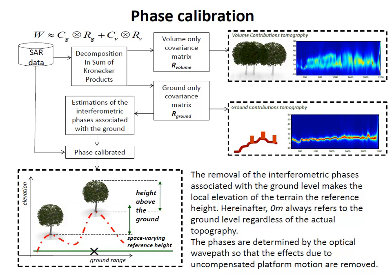To perform phase calibration, we exploit information from the interferometric and polarimetric perspectives. We describe the data using the sum of coherency matrix, and associate contributions to the ground and the volume by the framework of the sum of coherency products.